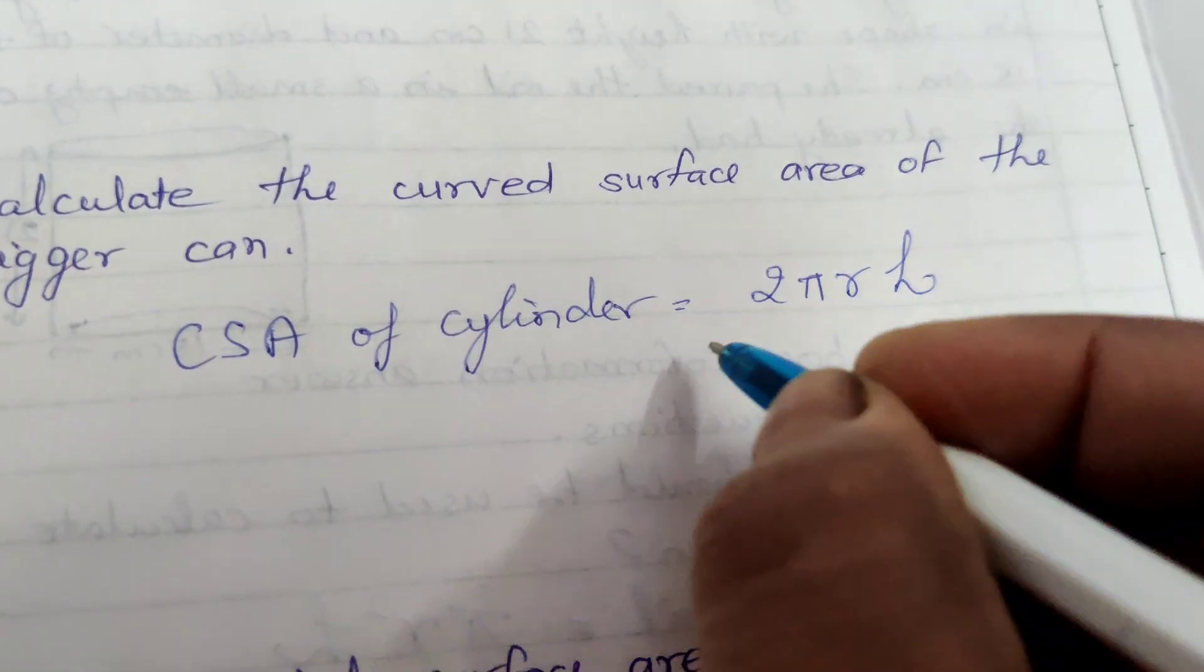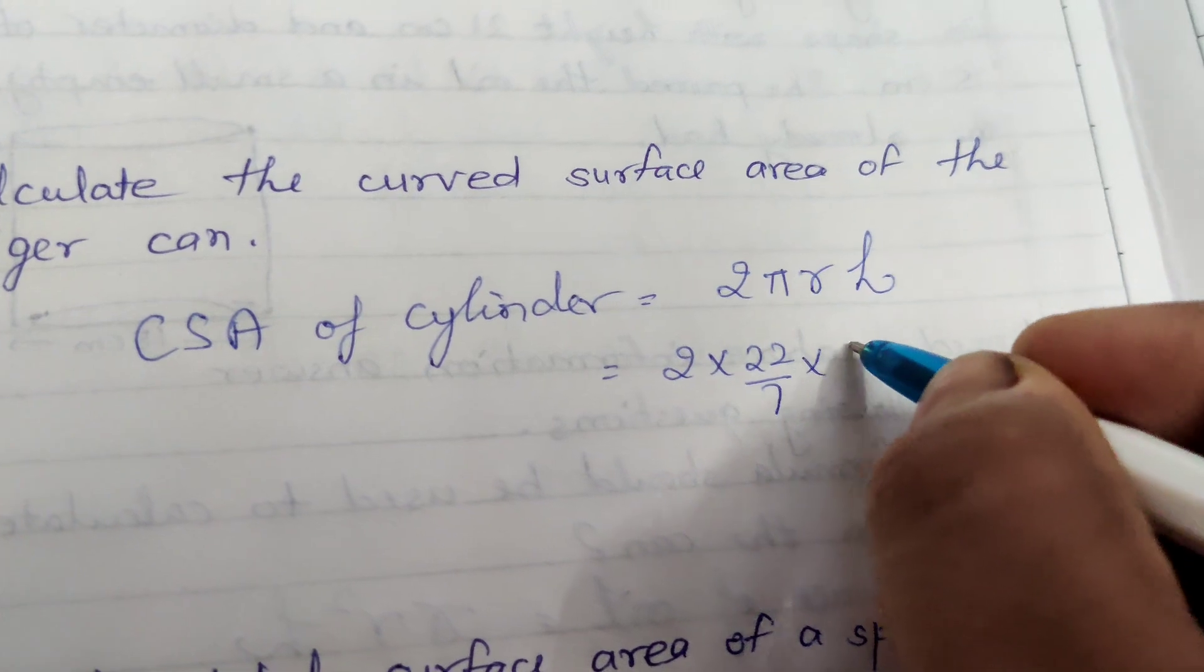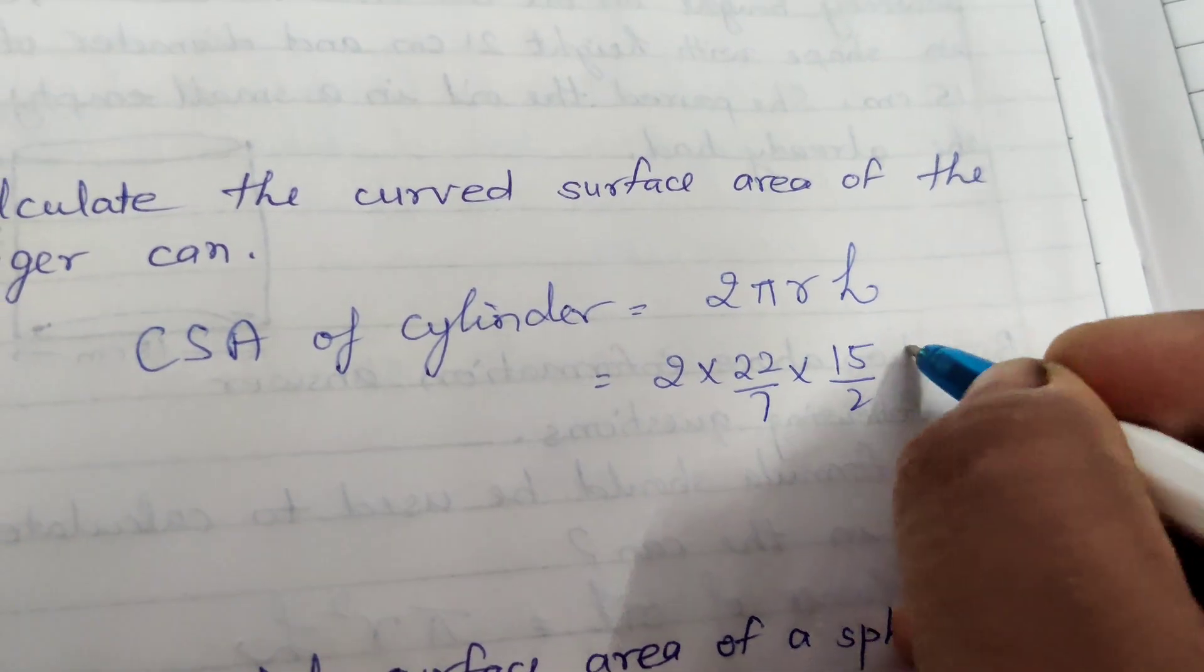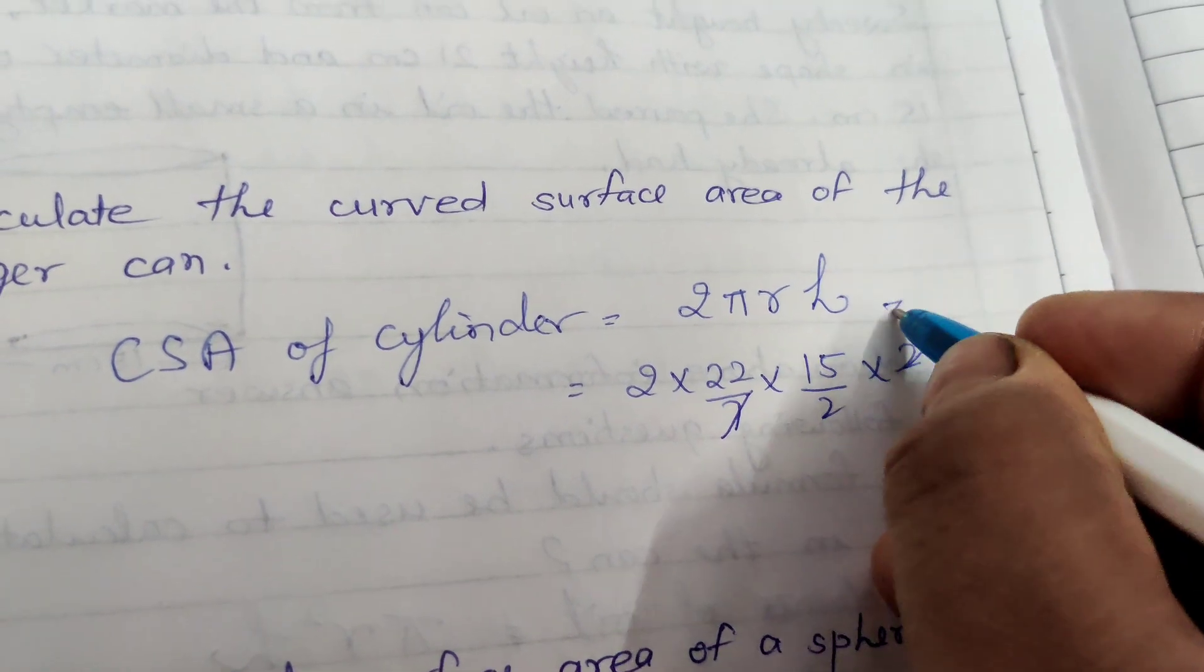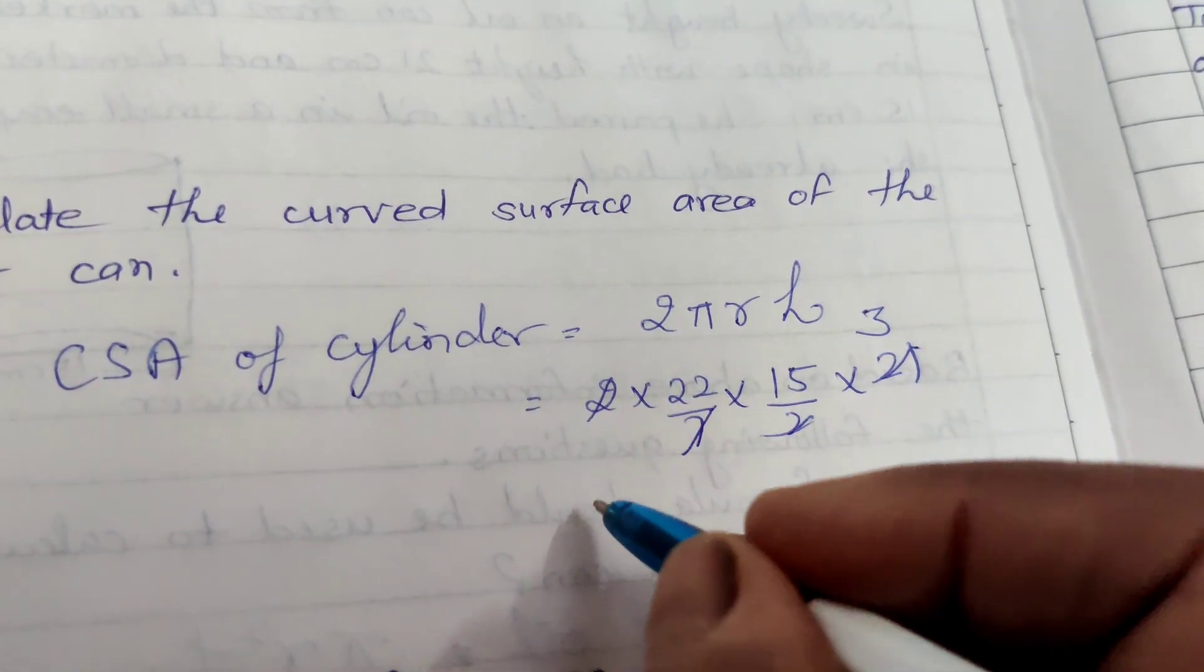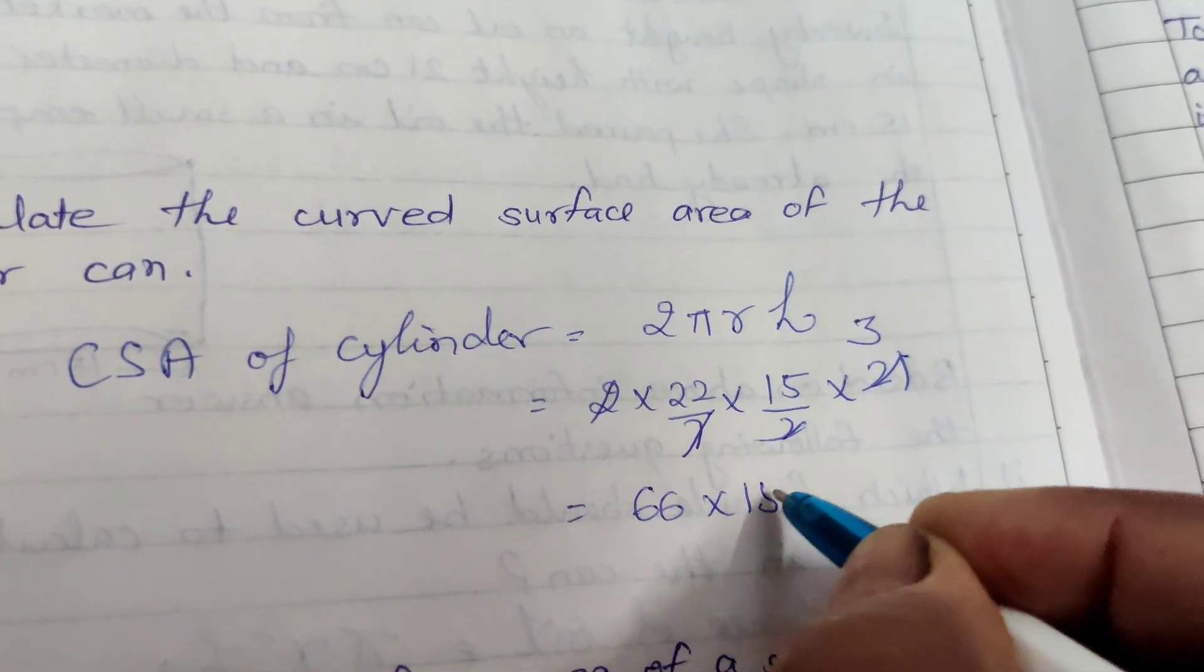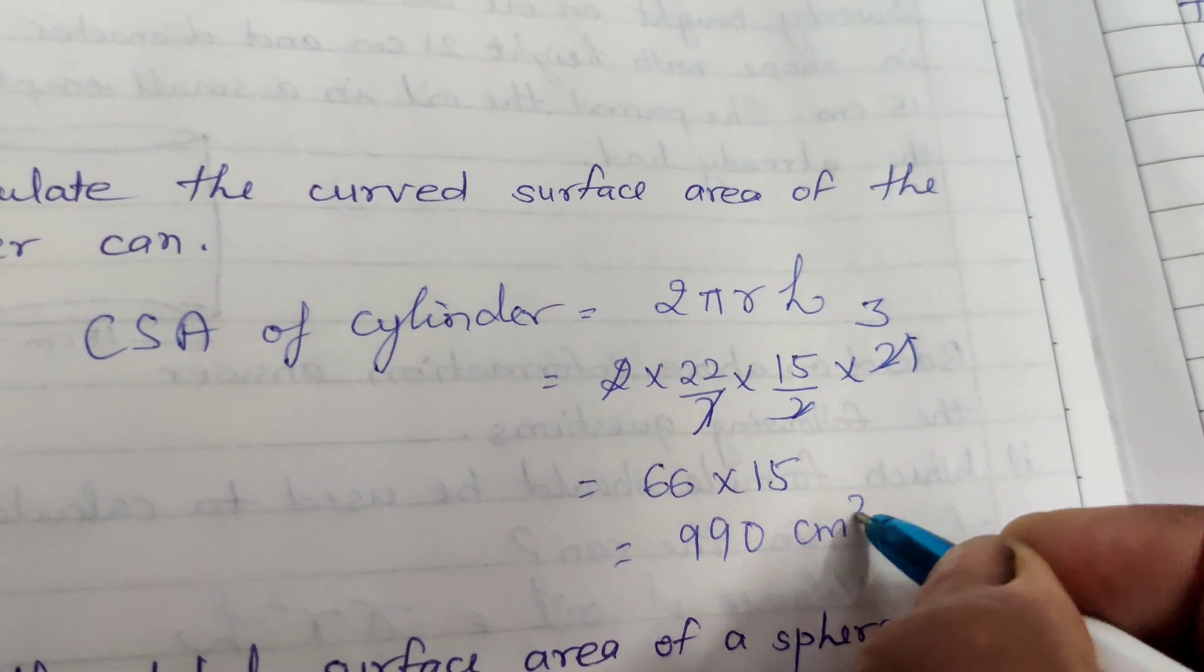Just put the values of radius and height. 2 pi is 22 by 7, radius is 15 by 2, and height is 21. Now simplify to cancel. 15 into 66 into 15 is 990 centimeter square.